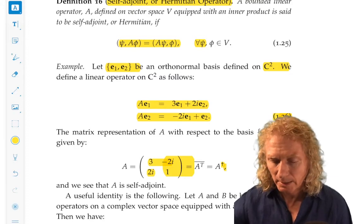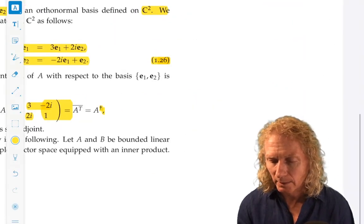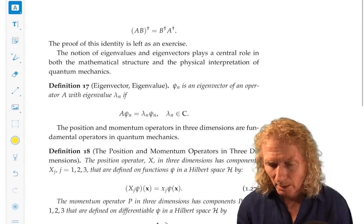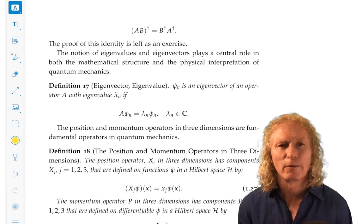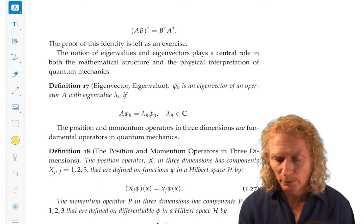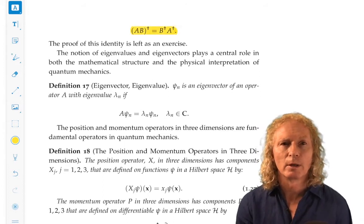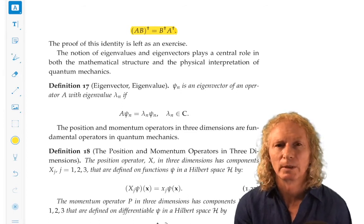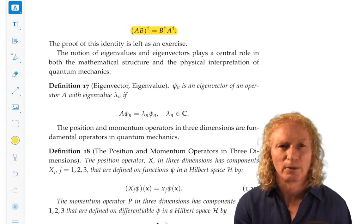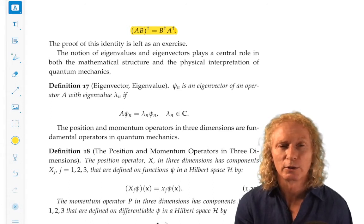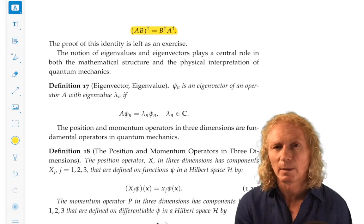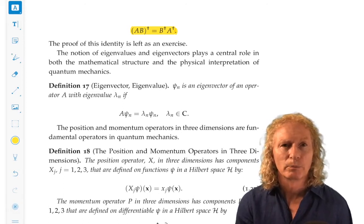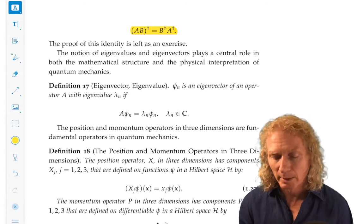There are many identities that we can derive using the definition of the adjoint that kind of have a familiar feel from properties for matrices. For example, the adjoint of the product is the product of the adjoints, but you reverse the order. This is going to be an exercise that we do later on, so I'm not going to spend much more time on that. But these end up being very useful when we look at products of self adjoint operators.